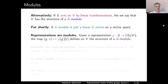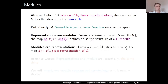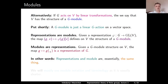Given the representation φ from G to GL(V), consider the map sending the pair (g, v), where g ∈ G and v ∈ V, to the element φ(g) applied to v. This defines an action of G on V by linear operators, giving V the structure of a G-module. Vice versa, given a G-module structure on V, the map assigning to each g ∈ G the transformation given by acting with g is a representation of G. So representations are modules and modules are representations — these terms are essentially the same.